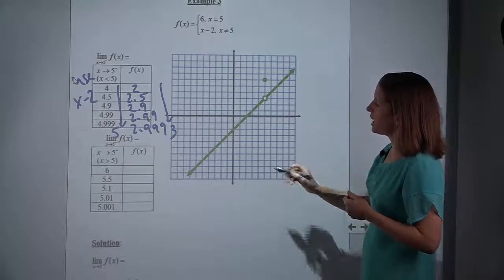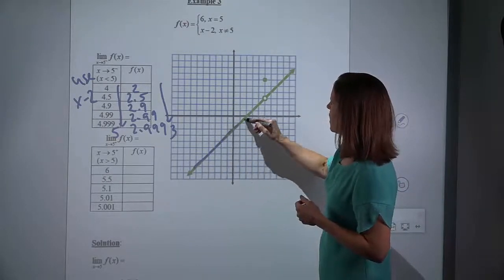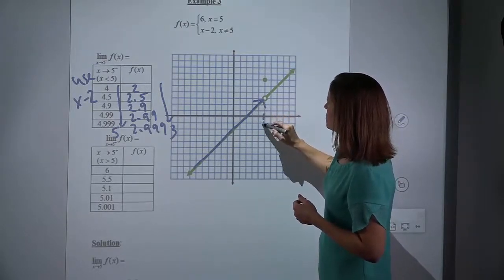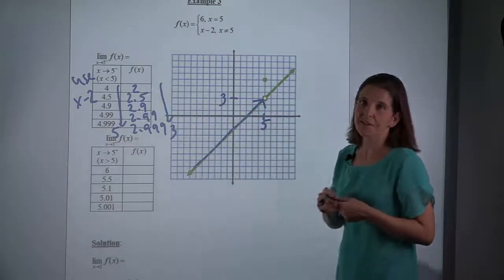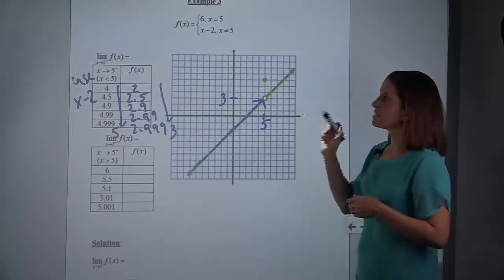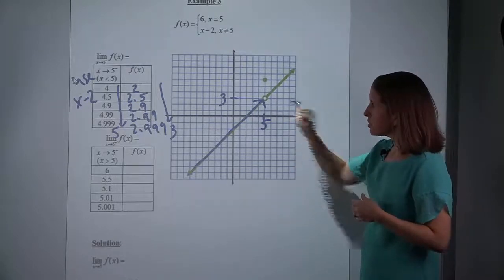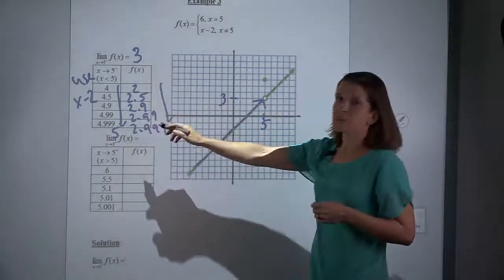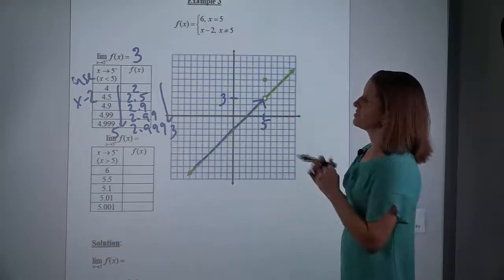Graphically, we would trace this graph from x's that are less than 5, heading towards 5. As we get really close to an x of 5, our y is getting close to 3. Remember, I don't care about an open circle, because a limit says: what are you approaching? And you are clearly approaching 3. So our answer to the limit from the left, whether you do it with a table or you're just tracing it, our answer is 3.